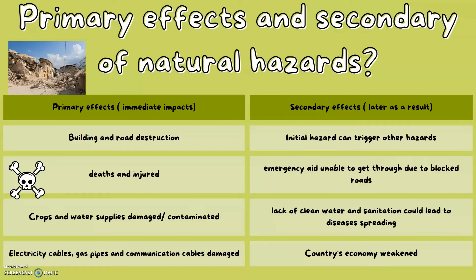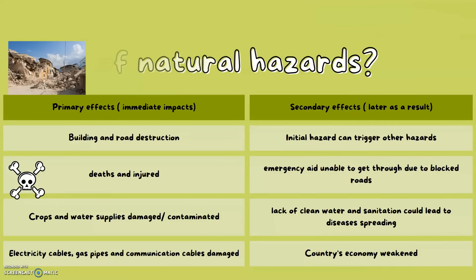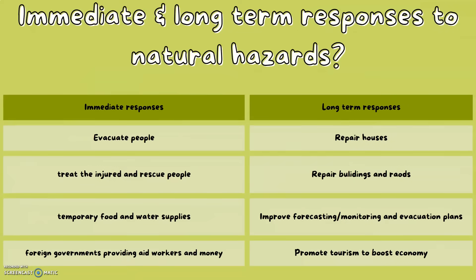Now let's look at the responses to a natural hazard — both immediate and long-term. Immediate responses include evacuating people, treating the injured, rescuing people, giving temporary food and water supplies, and receiving foreign aid from other countries. Long-term responses include repairing houses, buildings, and roads, improving forecasting, monitoring and evacuation plans for future hazards, and promoting tourism to boost the economy — for example, Hawaii promotes their volcanoes, which provides a lot of money for them.